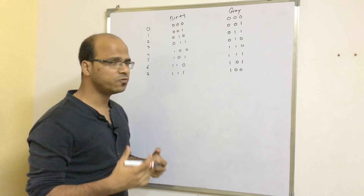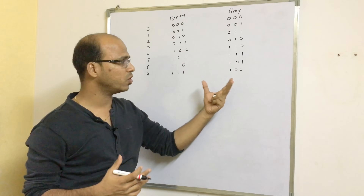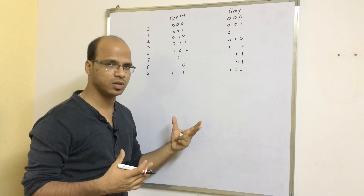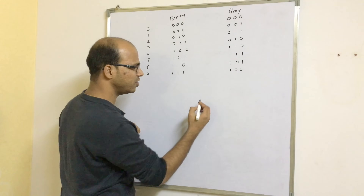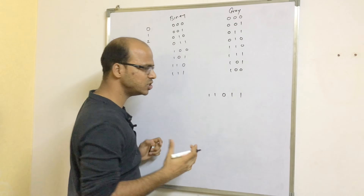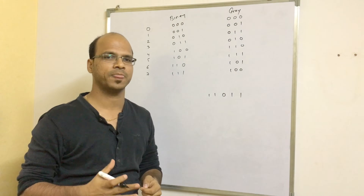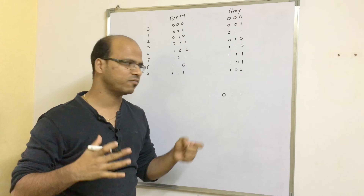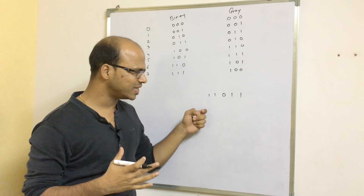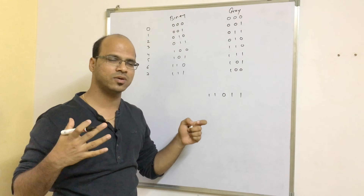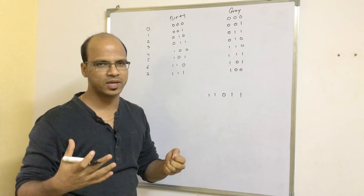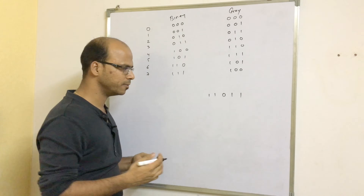But how do you find a gray code directly from a binary code? Let's say you don't have this table and you have a binary format as 11011. To understand the conversion, we need to first understand what is the XOR gate or XOR operator.